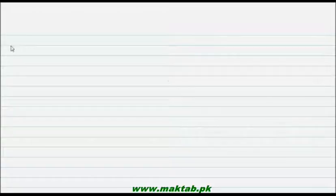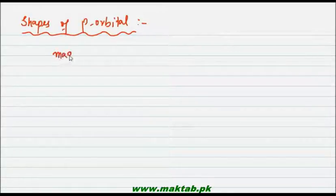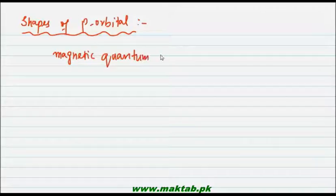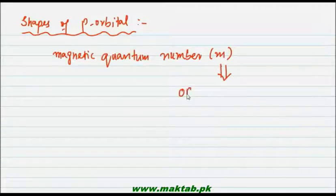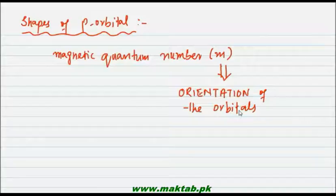Now, going next to the shape of the P orbital. You have to recall the magnetic quantum number, which we call M — this is about the orientation of orbitals. For the P sub-shell, the magnetic quantum number M has three values: plus 1, minus 1, and 0.